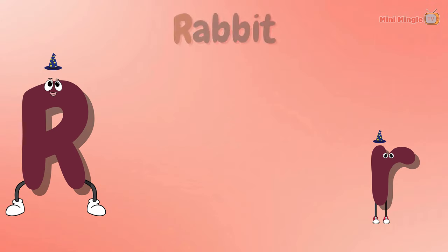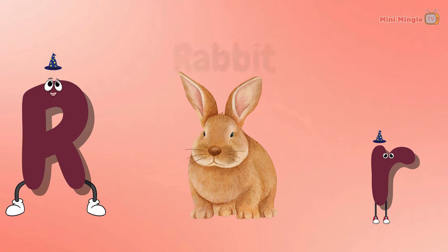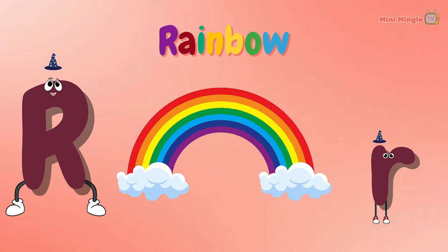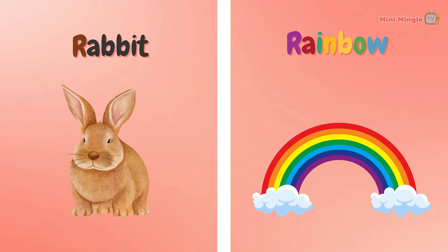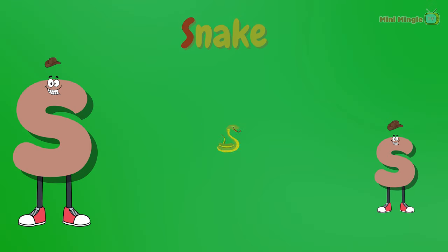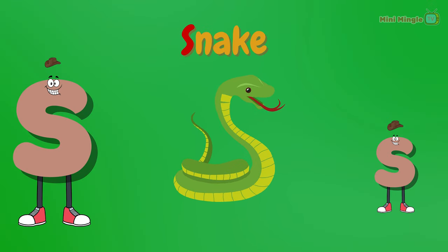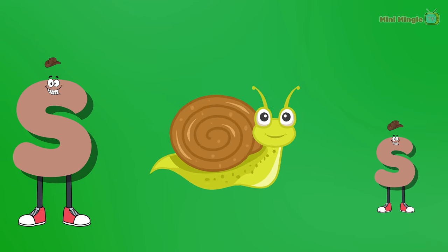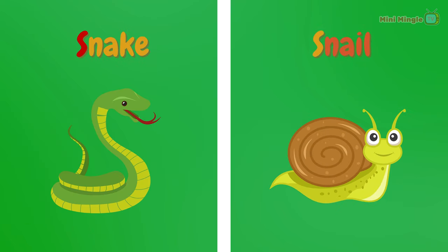R for rabbit. R for rainbow. Rabbit and rainbow. S for snake. S for snail. Snake and snail.